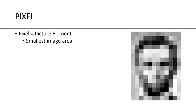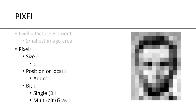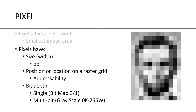The very first term we need to define is pixel. Pixel is a word that comes from two other words: picture element. A pixel is the smallest image area. Pixels have three characteristics. They have a size — you can measure their width or their length, and that would be the PPI, pixels per inch. That pixel has a position or a location on a raster grid, which we call the addressability — what horizontal column, what vertical row.